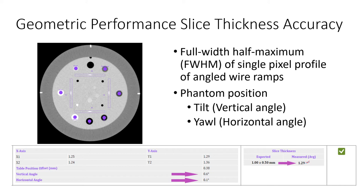An estimate of the full width half maximum is determined to establish sampling locations for baseline correction. Using this new baseline corrected profile, the final full width half maximum is calculated by linear interpolation, and the z-axis measurement is reported as a product of the full width half maximum and the tangent of the ramp angle. The application of a smoothing filter to the ramp profile data may be implemented with criteria based on a combination of expected slice thickness and image noise.